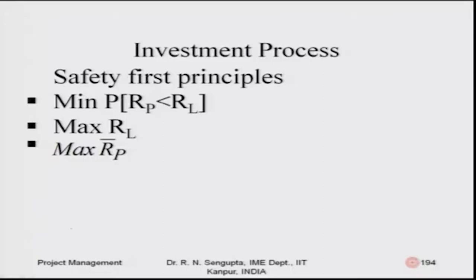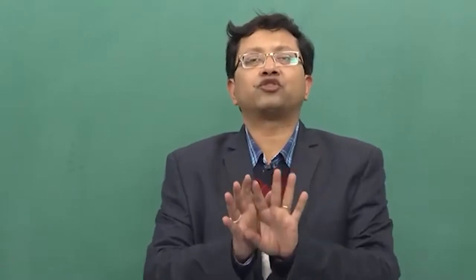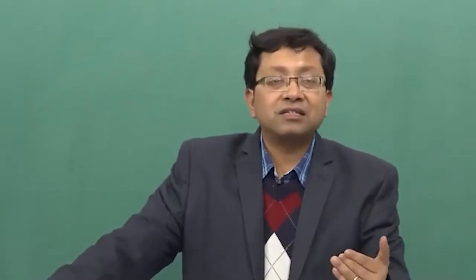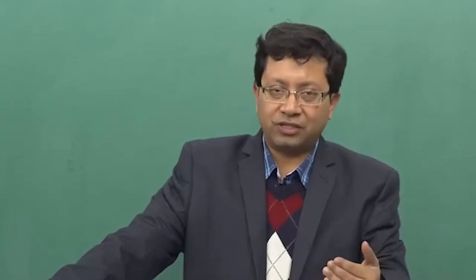The first formulation is that you try to minimize P, the probability that the value of the portfolio of projects is less than some R_L. R_L is basically some fixed value which you have set for yourself. Consider you are making an investment or planning a project — you consider the total return should not fall below, say, twenty percent. So you minimize the chances that the return on the project falls below that overall percentage.